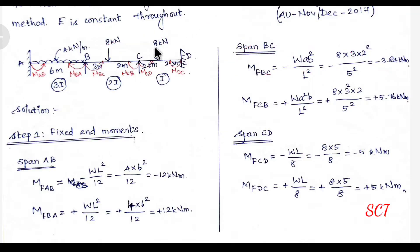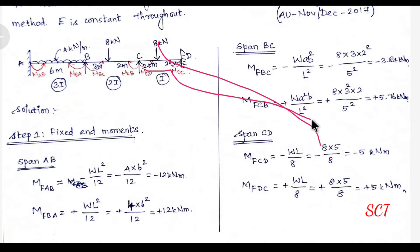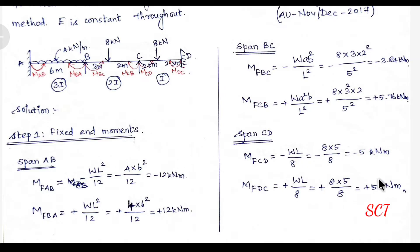Next, MF_CB. Substituting B and C values with the clockwise moment formula gives a positive value of plus 5.76 kNm. Next, span CD, with central load: formula is WL divided by 8. Anticlockwise is negative, clockwise is positive. W value is 8 kN, L value is 2.5m. Substituting gives minus 5 and plus 5 kNm.